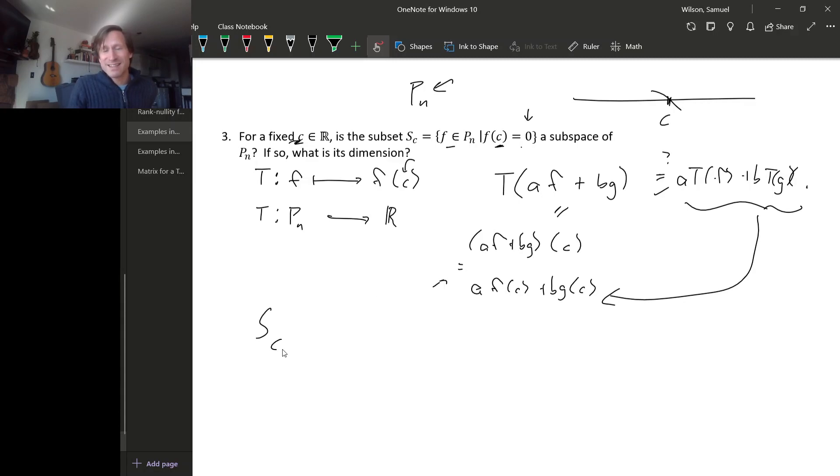The second thing to notice is that this subset, S sub C, is exactly the kernel of this linear transformation. Every polynomial in this set is a polynomial that when you plug C into it, you get zero. But these are exactly, this is T of F right here. So this is really just the kernel of our linear transformation T. So is this a subspace? Well, yes, because it's the kernel of a transformation. So this is a subspace of P sub N.